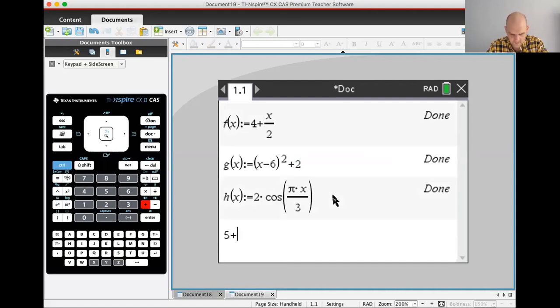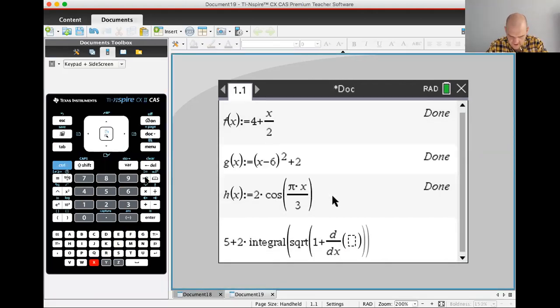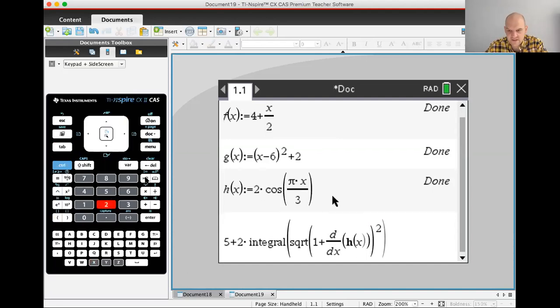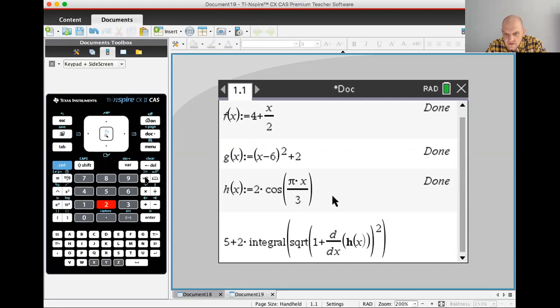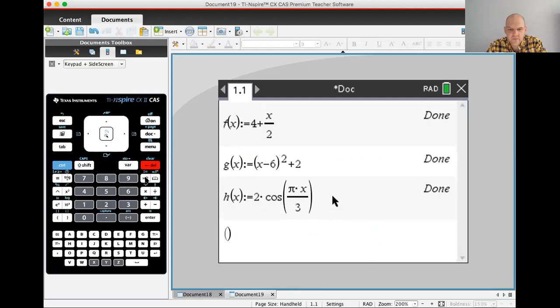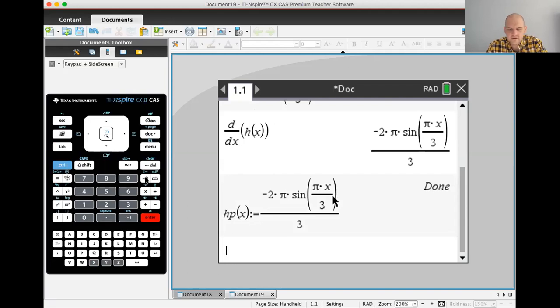So we want to do five plus two times the integral. Do I know what I'm doing? Not really. Square root of one plus. I'm going to use the template and just get the derivative with respect to X of H of X. And then I need to square that. Oh, that's not even right. It's squaring the square root. Oh my God. Can I not do it? Why won't it do that? All right. Back to the drawing board. Derivative H of X comma X. I'm going to store that as HP of X. Harry Potter. Okay.